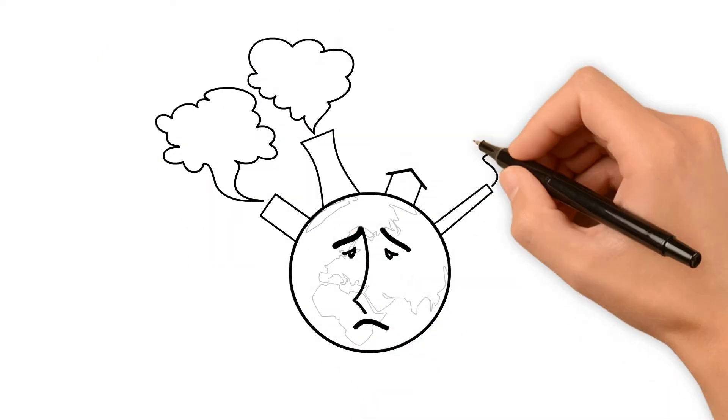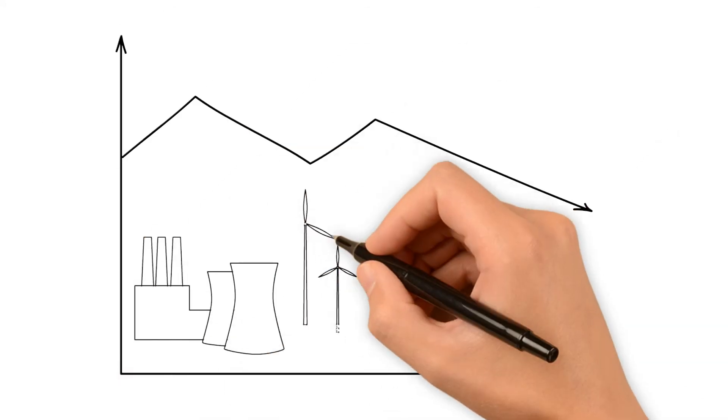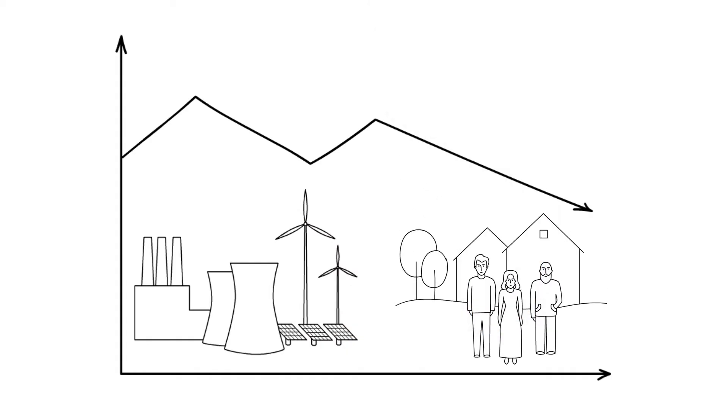Catastrophic climate change is on the cards if we don't reduce greenhouse gas emissions quickly. Reductions have to be made both by suppliers of energy and those who use energy.